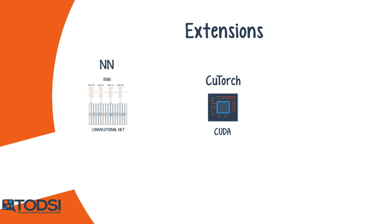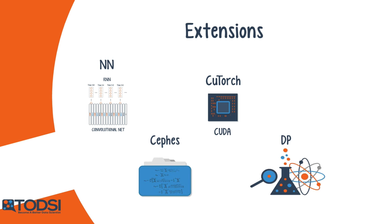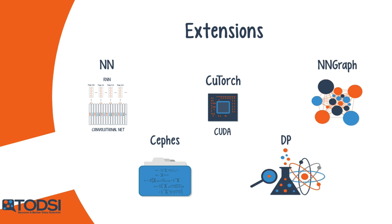The NN library allows you to work with different architectures and stack different nets together. Cephas extends Torch with a specialized math library. DP is a deep learning library for streamlining the R&D process. NNGraph provides graph tools for the NN library. There are many other important extensions, so if you want to learn more, be sure to check out the Torch website.